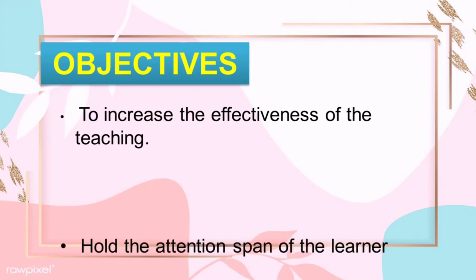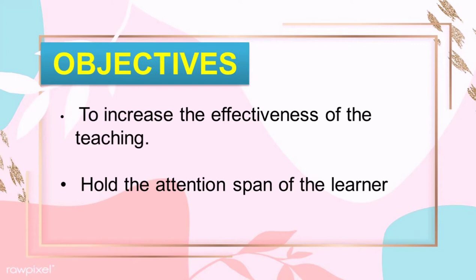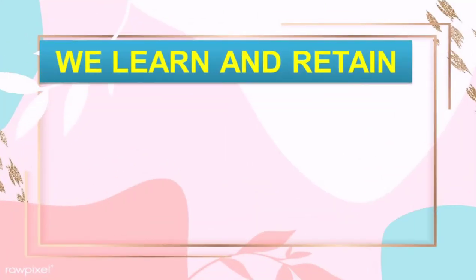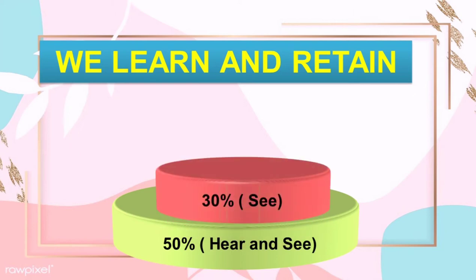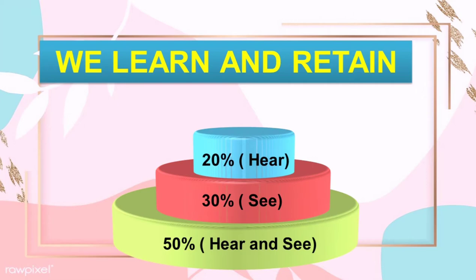The second one is to hold the attention span of the learner. It helps the teacher to present the lesson effectively and students learn and retain the concept better and for a longer duration. The last one is to save time. According to research, there are percentages on how we can learn and retain a certain lesson. Higher levels of attention can be achieved through active involvement in learning — 50% of what we hear and see, 30% of what we see, 20% of what we hear, and only 10% of what we read.